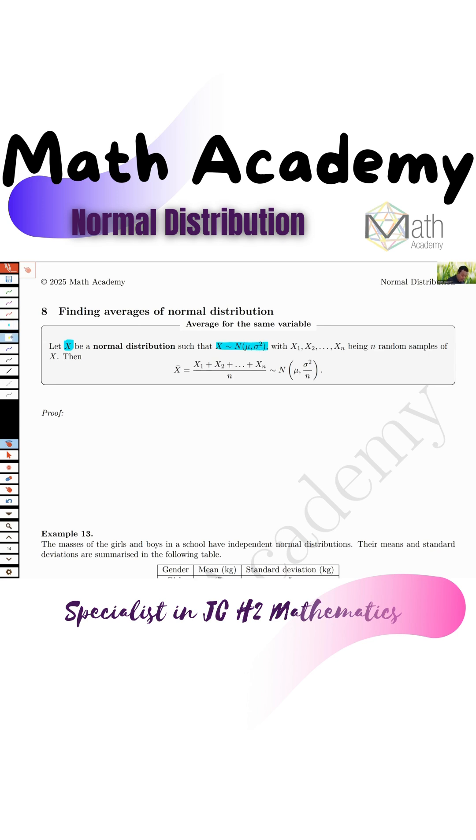They are going to give you n different kinds of x. You have x1 to xn which are different samples of x.